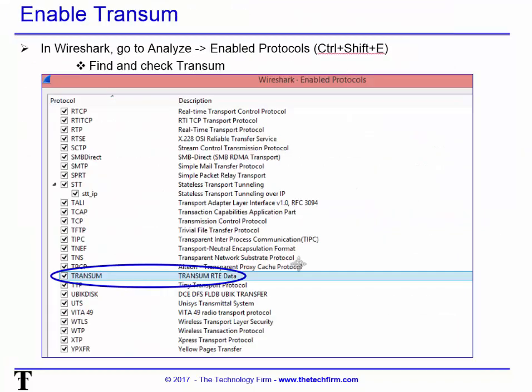So how do you enable it? When you go to Wireshark, go to your enabled protocols — it's under Analyze > Enable, or Ctrl+Shift+E — and go find and check off Transum.